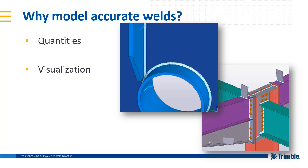Next, of course, is visualization. We are a visual animal and when we can see things we can easily identify possible problems. Seeing the detailed welds in the model makes discovery of fabrication problems easy. Being able to see the welds can also aid in better communication of design and details in both the model and the drawings.